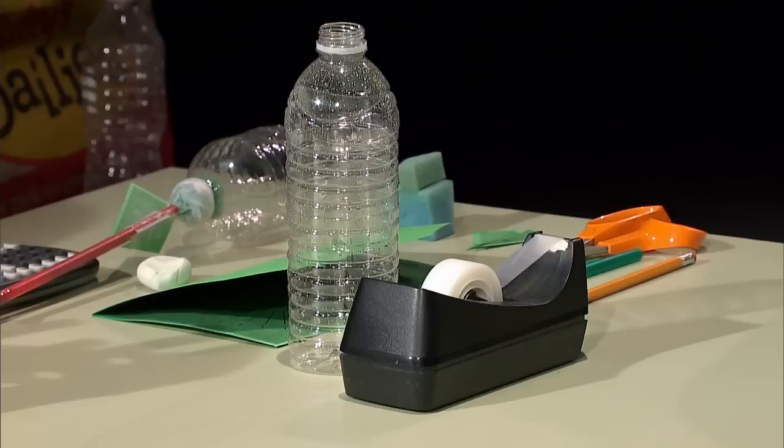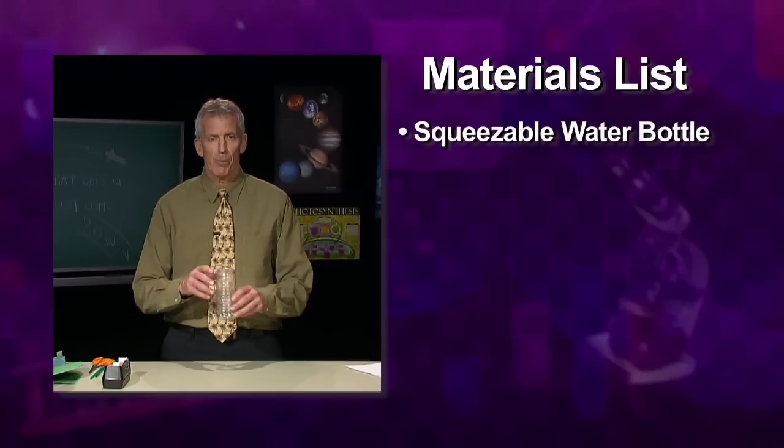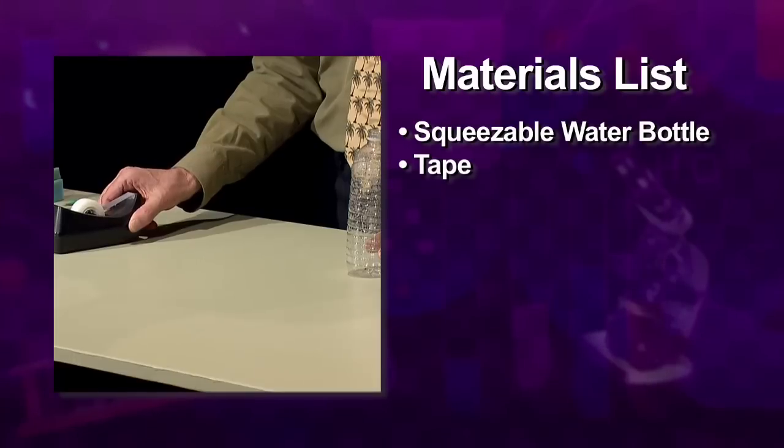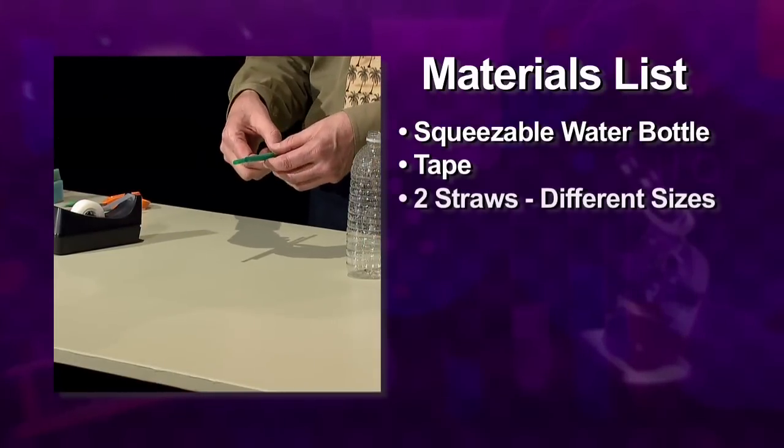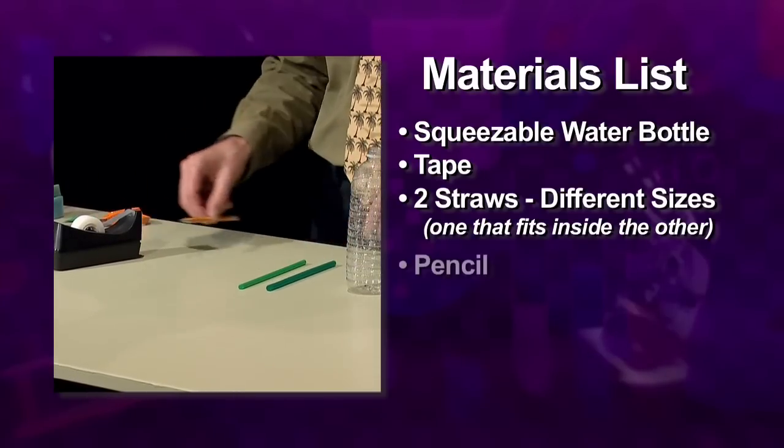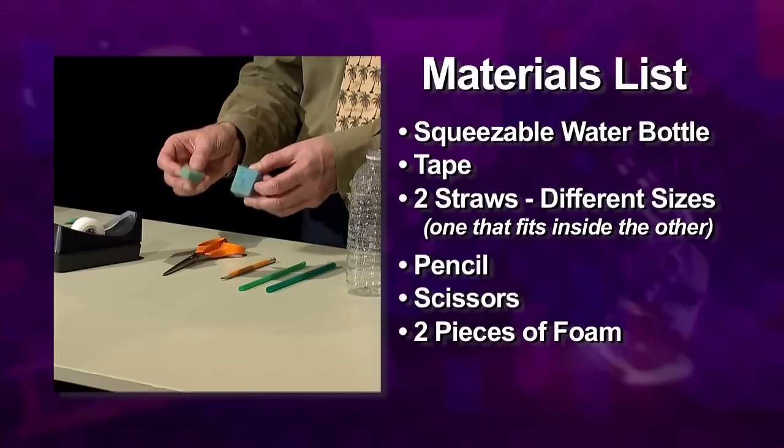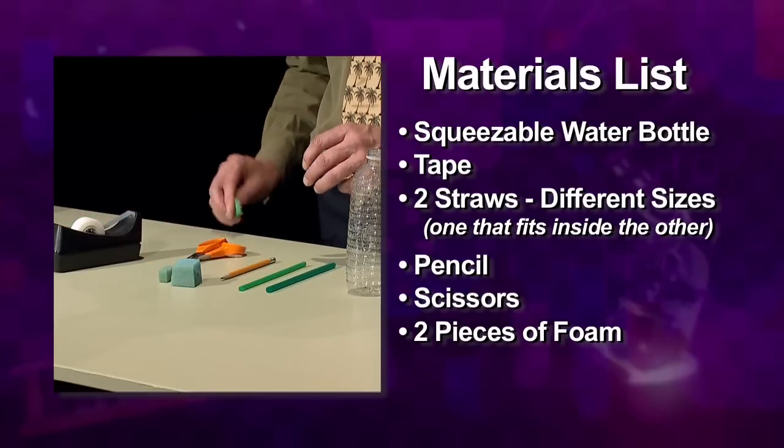To build this kit we'll need the following materials: a water bottle, some tape, two different size straws one that fits inside the other, a pencil, some scissors, a couple of pieces of foam, and three little fins cut from stiff paper.